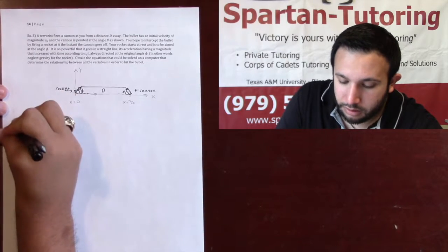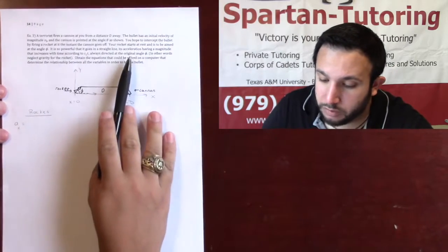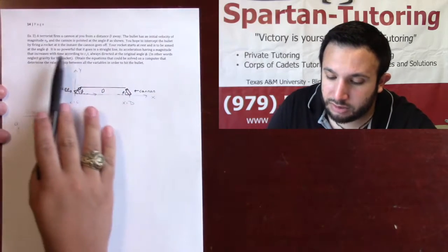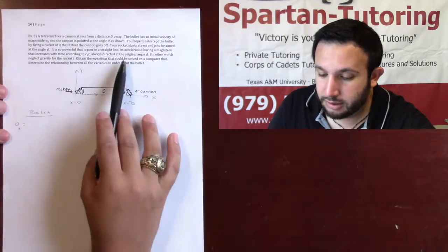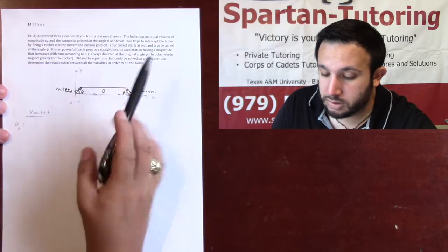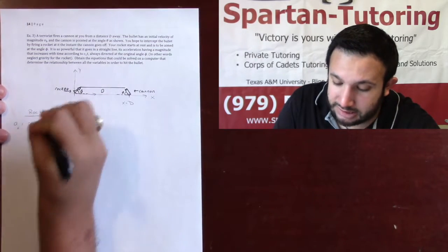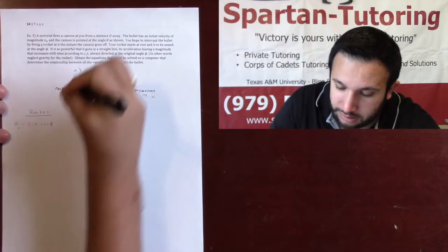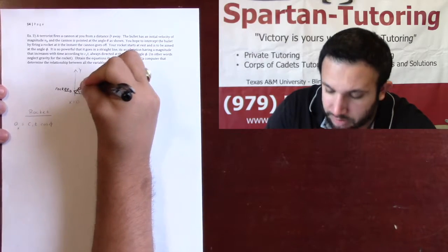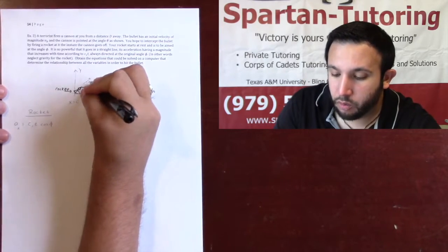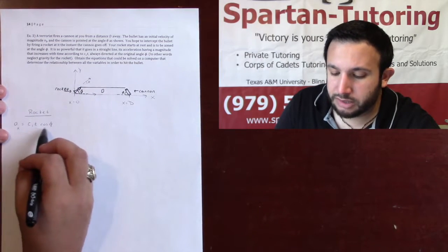Let's talk about the rocket first. What's the acceleration in the x direction? The acceleration has a magnitude that increases in time according to c1t, directed at the original angle phi. So the acceleration in the x direction is c1t times cosine phi — the x component is adjacent to the angle, and the y component will use sine.